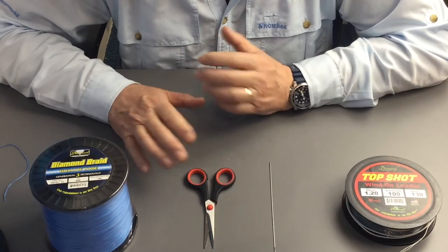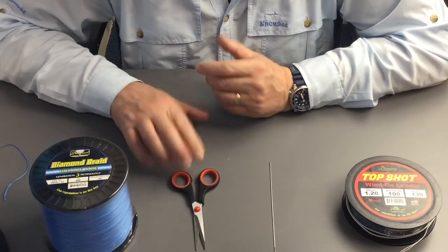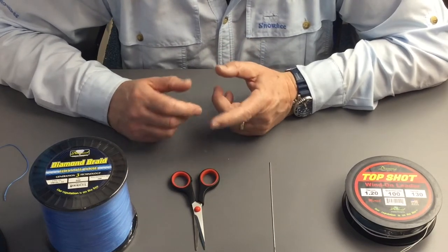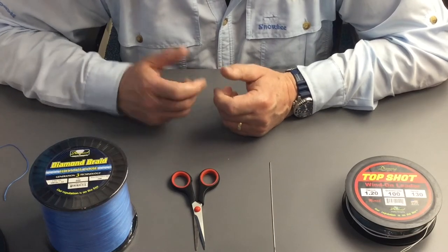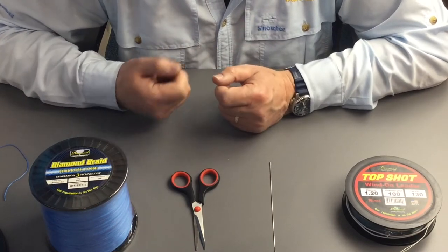Other than that not much equipment needed. Sharp pair of scissors, ideally scissors with a serrated edge so when you try and cut the hollow core the blades don't slide along it, you get a nice neat cut.